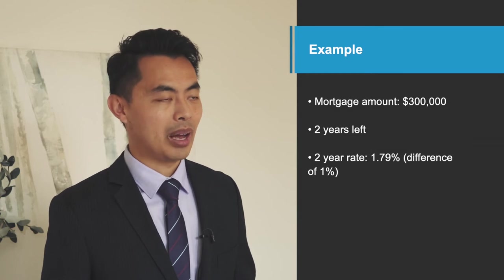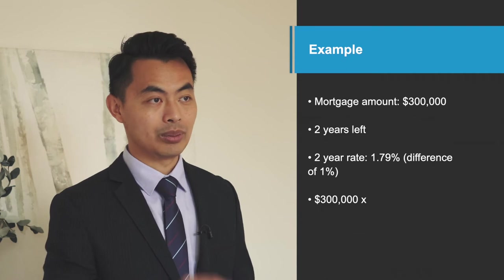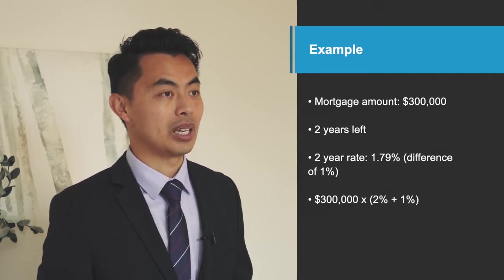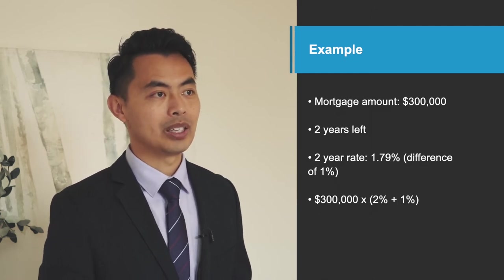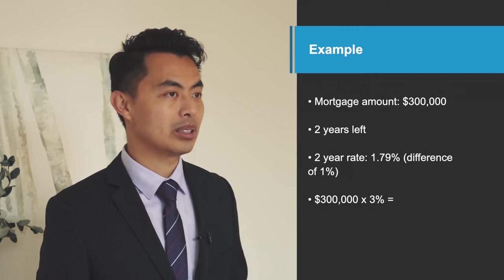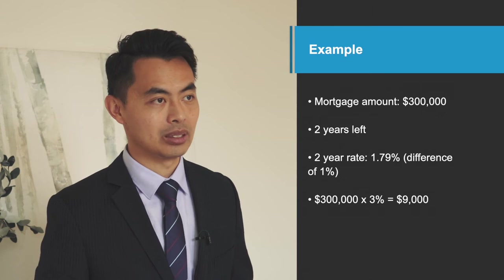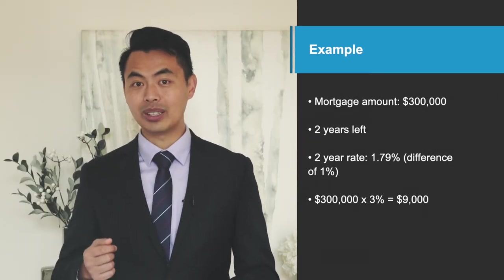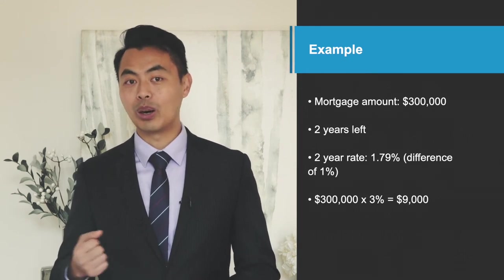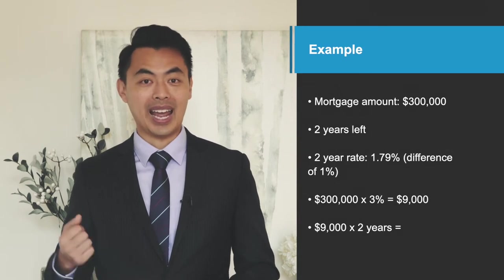So let's work out the math together. $300,000 is our mortgage amount. We got that 2% discount plus an additional 1% because of the two-year posted rate, so we have 3%. Let's multiply $300,000 by 3% and that works out to be $9,000. But that's only for one year. Remember, we have two years left, so we'll need to multiply that $9,000 by 2 and we get $18,000.